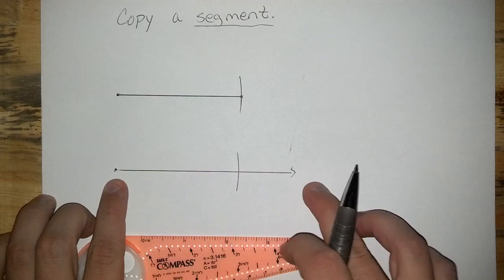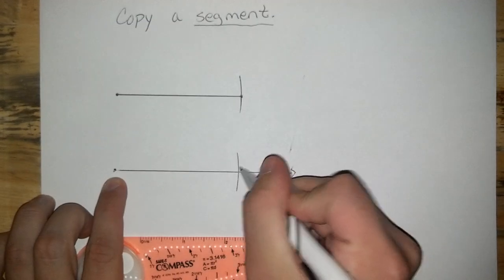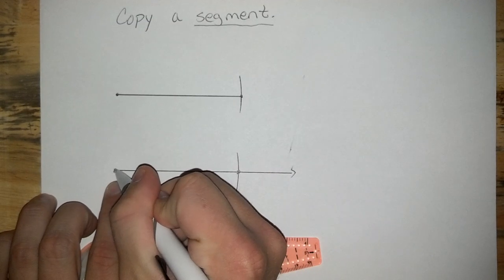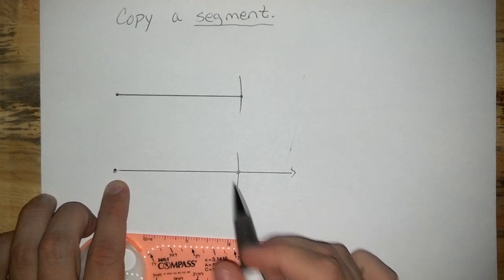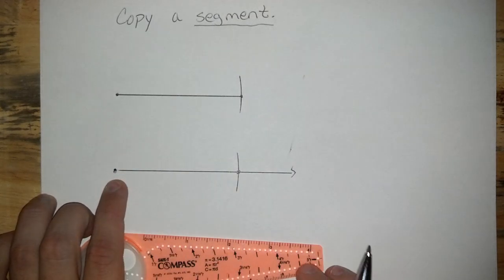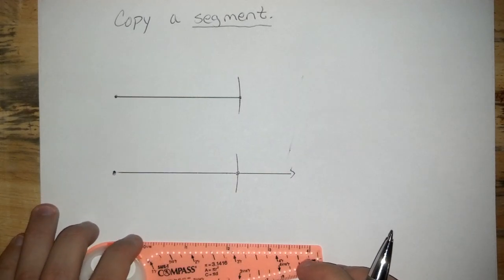What we've done is we've cut off a piece of that ray, creating a segment. We have an endpoint and an endpoint. This segment is now exactly as long as that segment. And that is how you copy a segment.